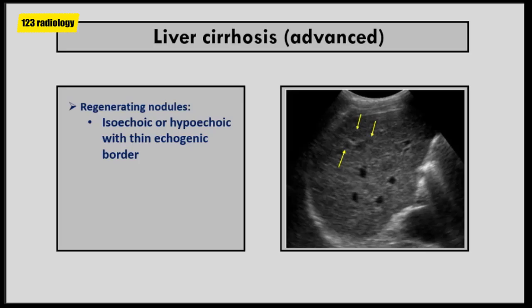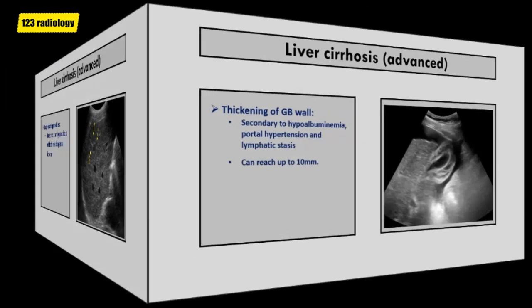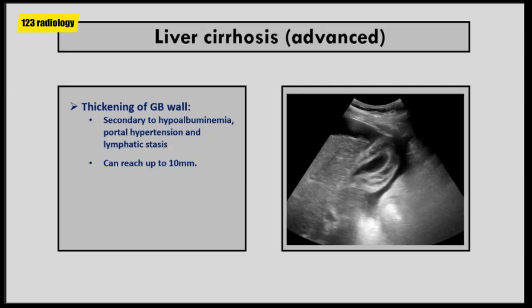Regenerating nodules are regenerating hepatocytes surrounded by fibrotic septae. On ultrasound, regenerating nodules are isoechoic or hypoechoic with a thin echogenic border corresponding to fibrofatty connective tissue. A frequent sign in liver cirrhosis is thickening of the gallbladder wall due to edema secondary to hypoalbuminemia, portal hypertension, and lymphatic stasis. In cases of liver cirrhosis, the gallbladder wall thickness can reach up to 10 mm.